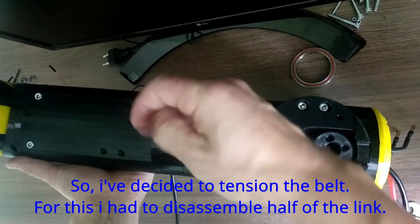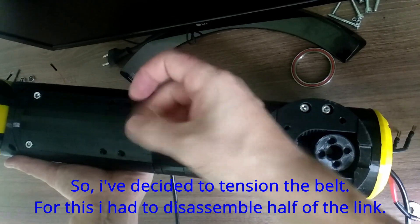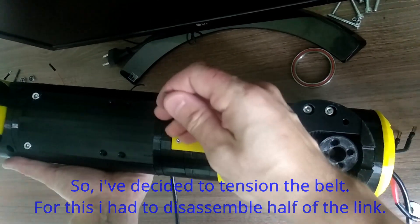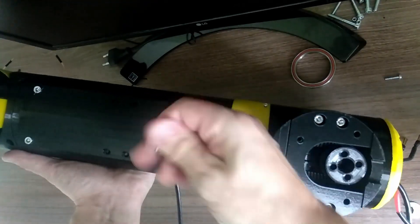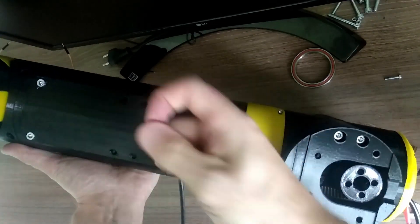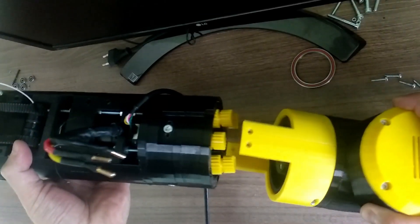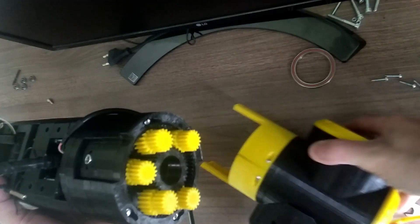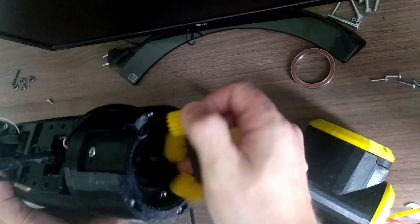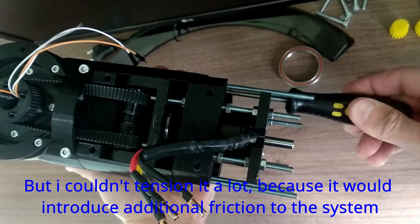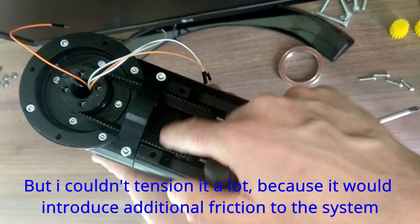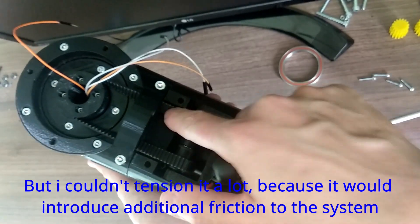So I've decided to tension the belt. For this I had to disassemble half of the link. But I couldn't tension the belt a lot because it would introduce additional friction to the system.